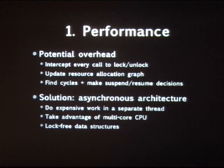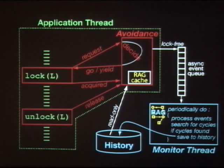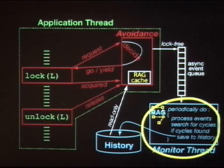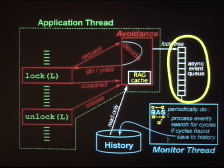Here is an architectural diagram. In green you have the original program; in red, the instrumentation applied to that program; and in the blue box is where DEMUNIX does most of the heavy lifting — maintaining the resource allocation graph, searching for cycles, et cetera. The key feature is that the application itself is decoupled from the DEMUNIX monitor thread through a lock-free asynchronous event queue. This allows the program to do as much of its work unhindered by DEMUNIX as possible.